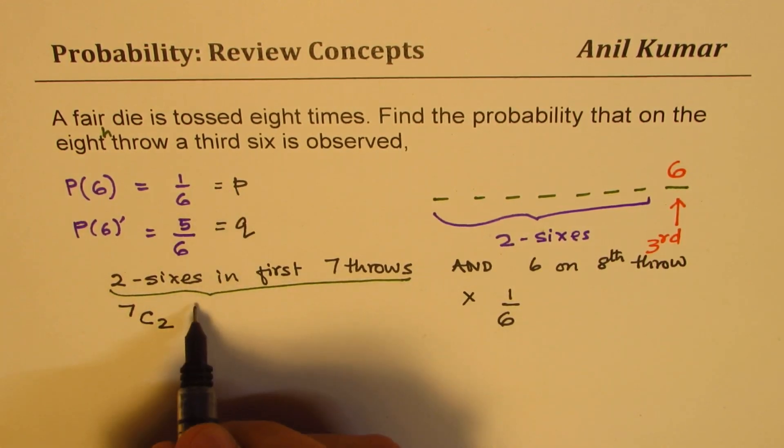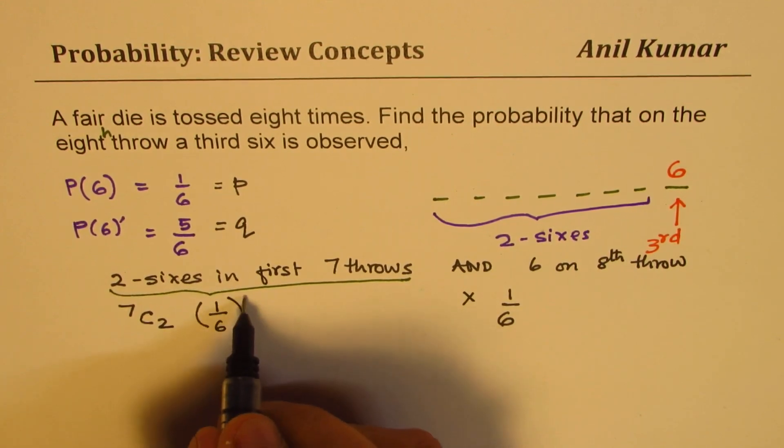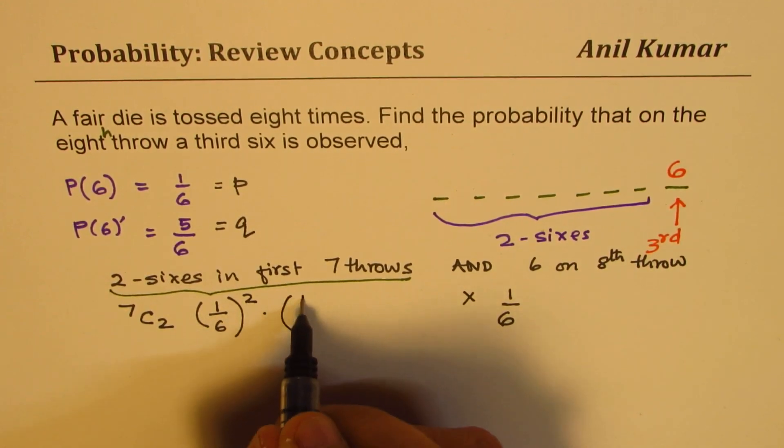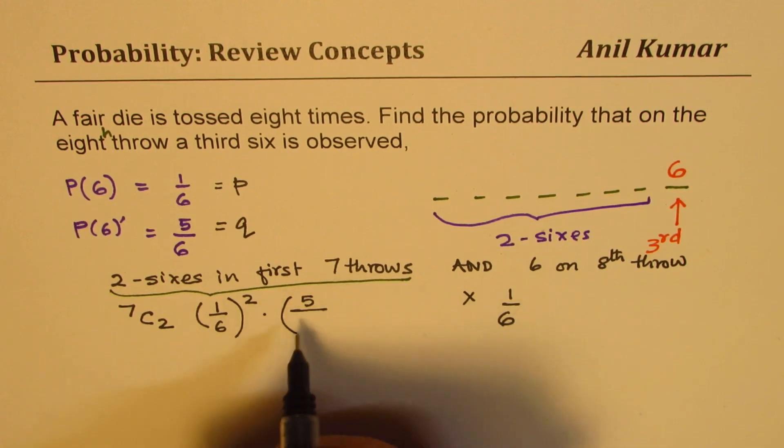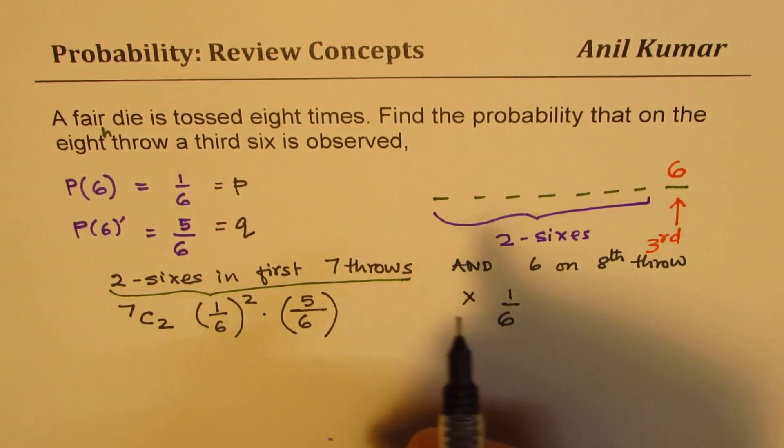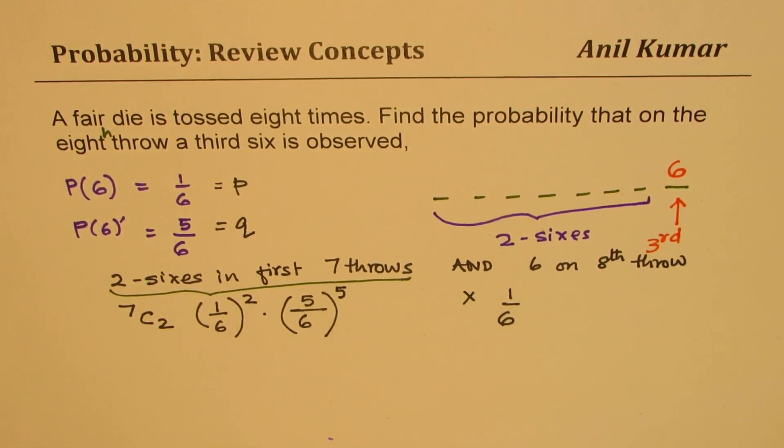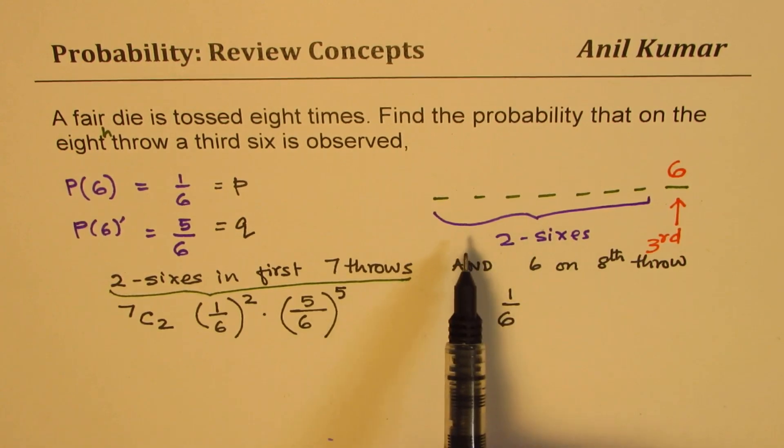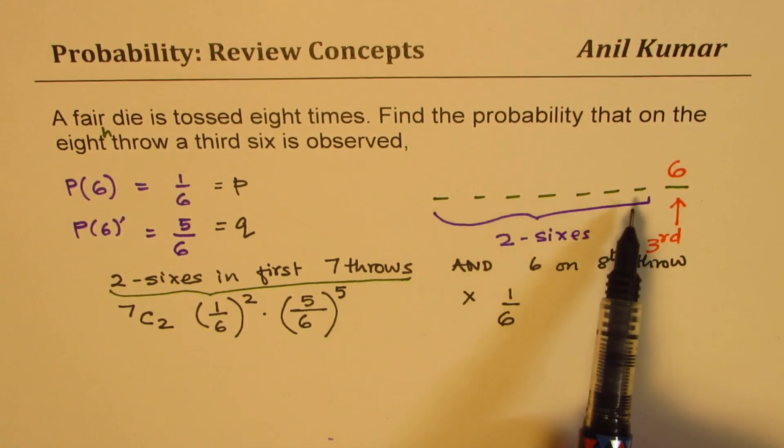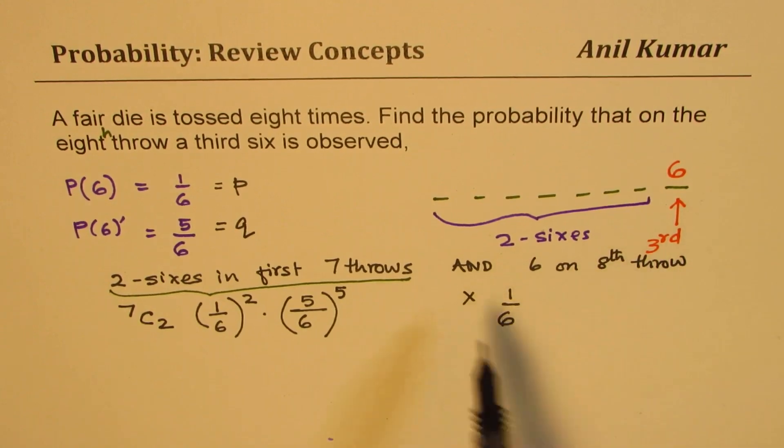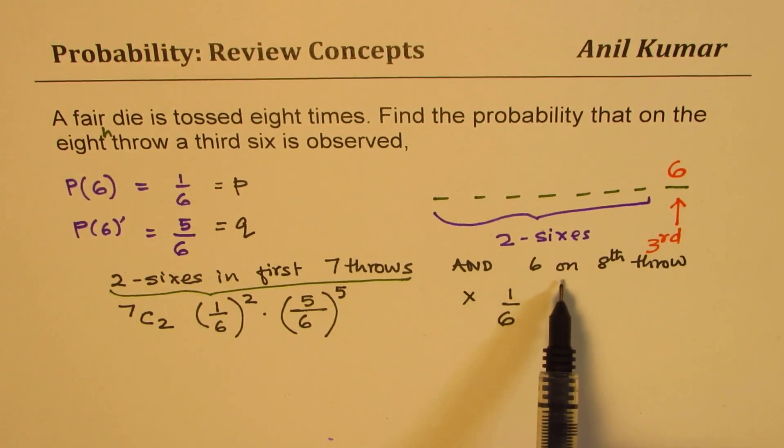So the success probability P is one over six, power of two, times failure probability not getting a six is five over six to the fifth. So out of seven places, any two, we are looking for six, right? So that becomes the probability of getting two sixes in first seven throws, and probability of getting six on the eighth throw is one out of six.